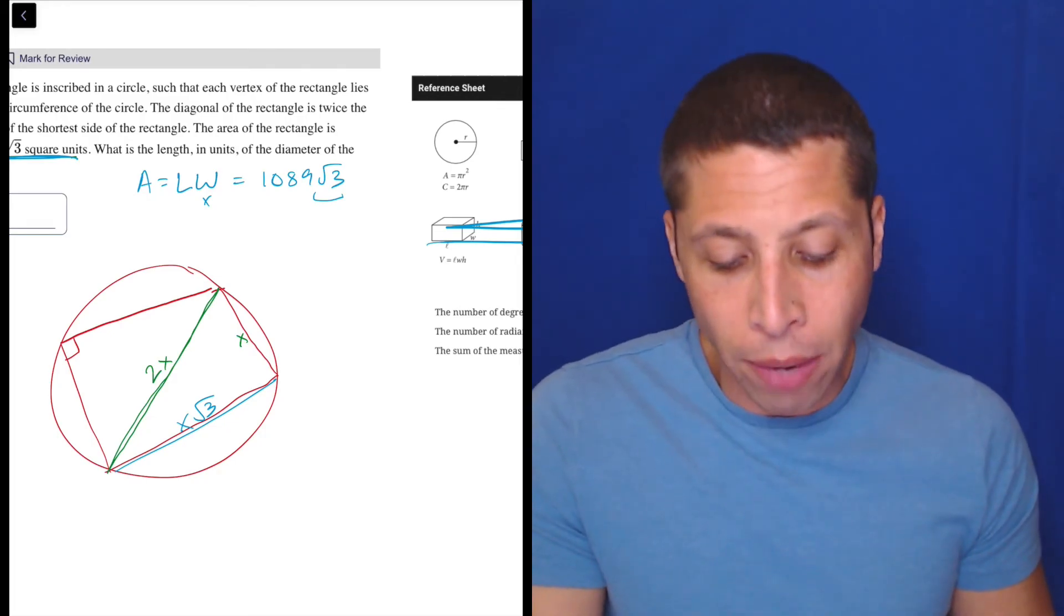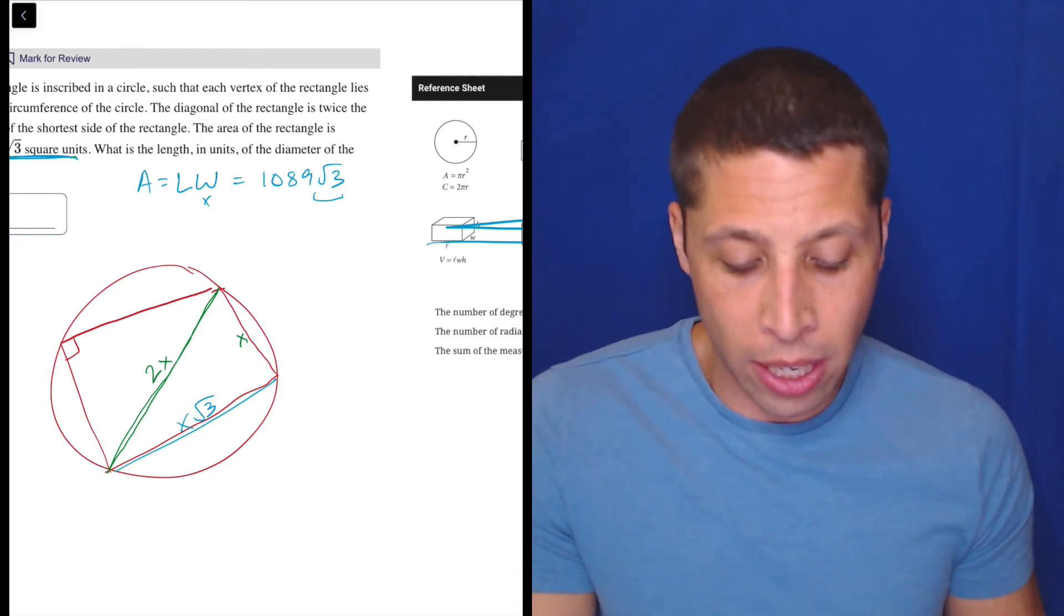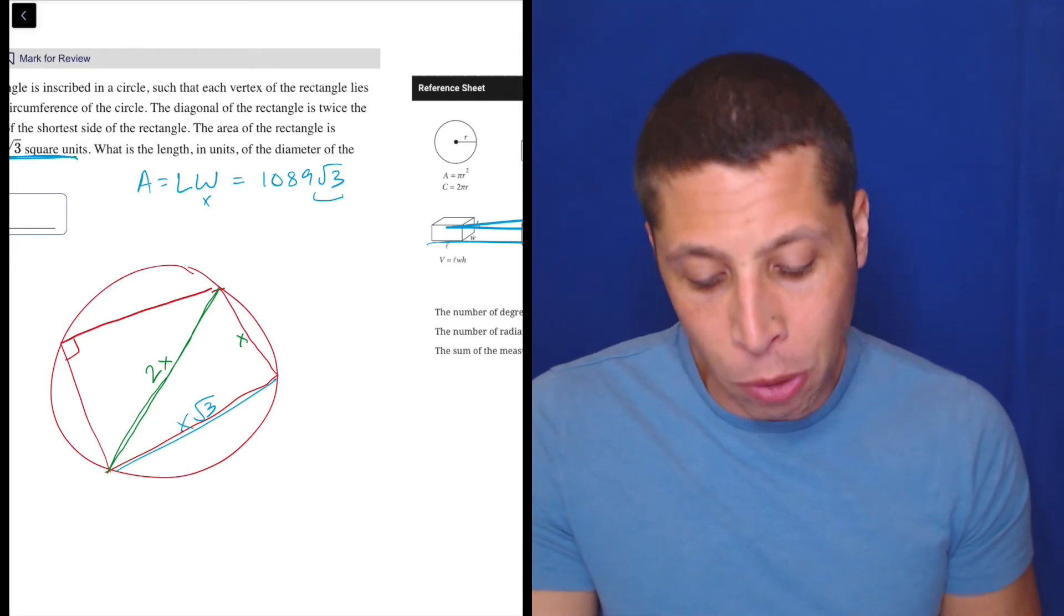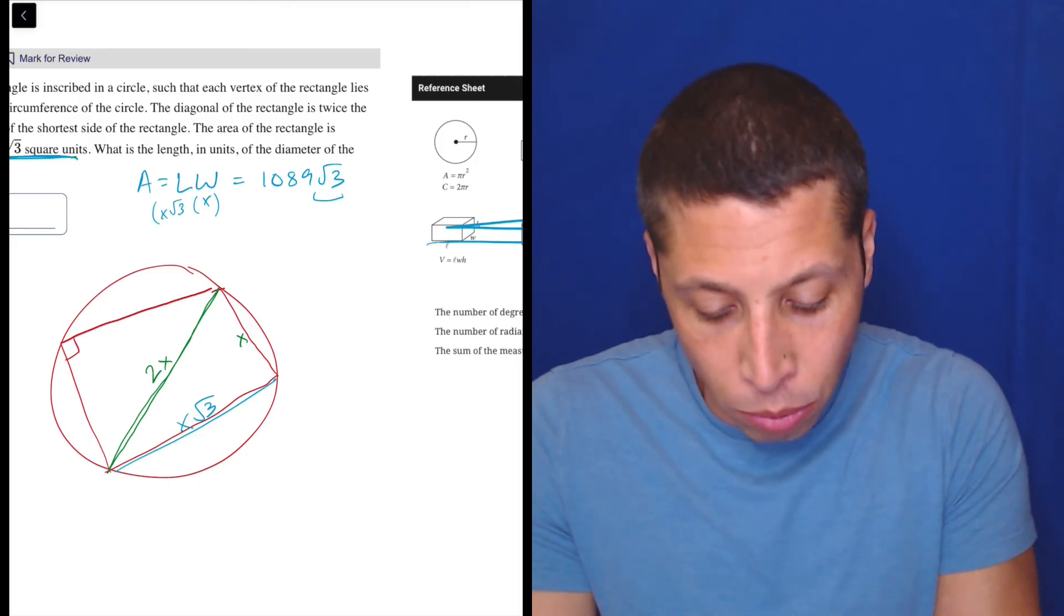Now what this lets us do is we're not really interested in the diagonal to use the area. We're much more interested in the relationship between the length and the width. So we have the width is x. I'm going to say the length is x root 3.